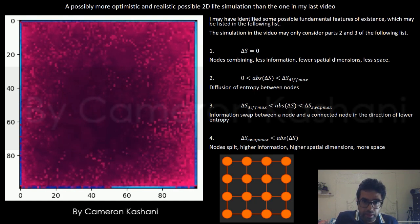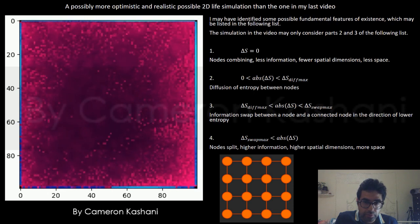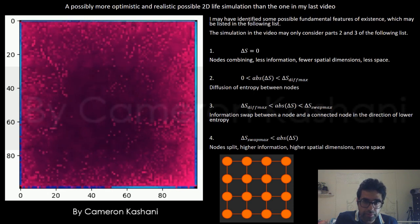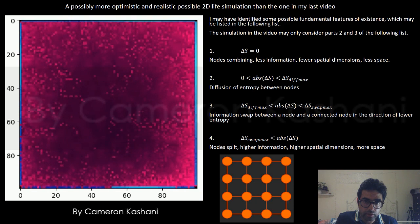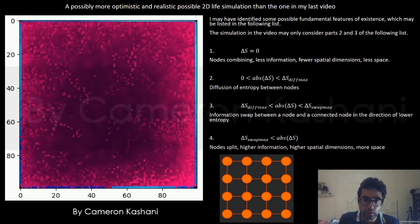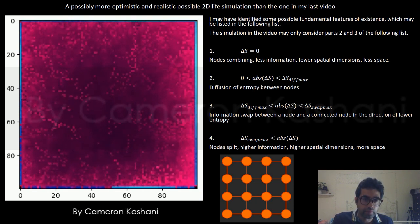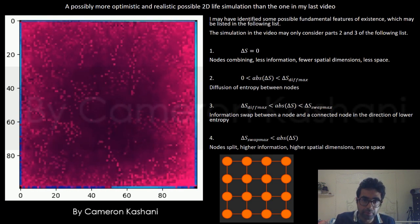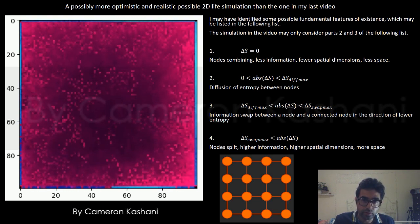At an entropy difference between two nodes below a certain threshold, it may be that diffusion of entropy may happen between those two nodes.